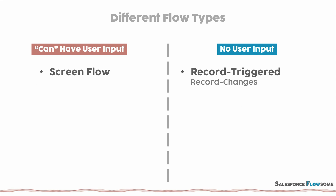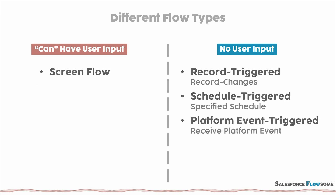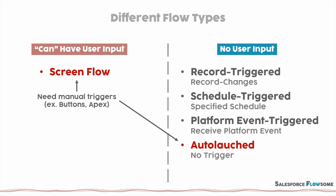On the right side, the first one is the record trigger flow — this flow will run whenever a record is changed. The second one is schedule trigger flow, which will run on a specific schedule. Then we have platform event trigger flow, which will run when a platform event is received. But this is mainly for building integration, so if you're not responsible for building integration, it's very unlikely that you will build this flow. And lastly, if there is no other trigger and there is no user input, it's what we call the auto-launched flow. For screen flow and auto-launch flow, you will have to design some manual triggers like buttons or actions. For auto-launch flow, you can use Apex or other flow solutions to trigger it.